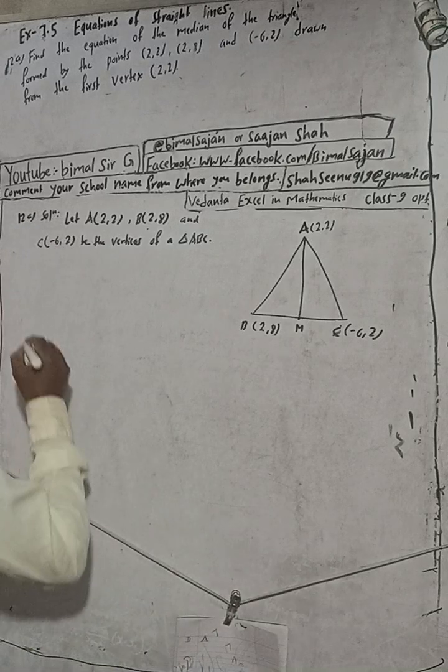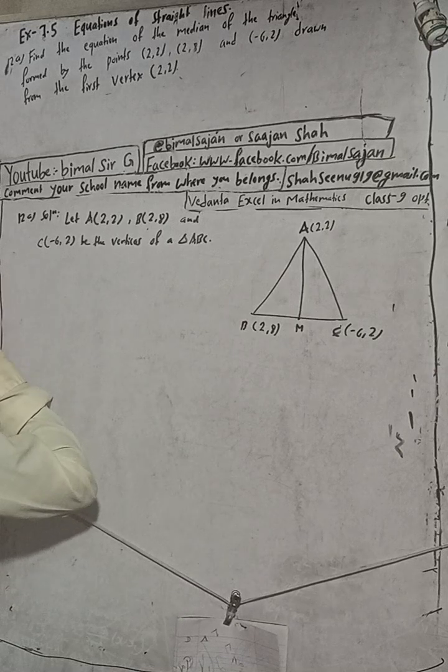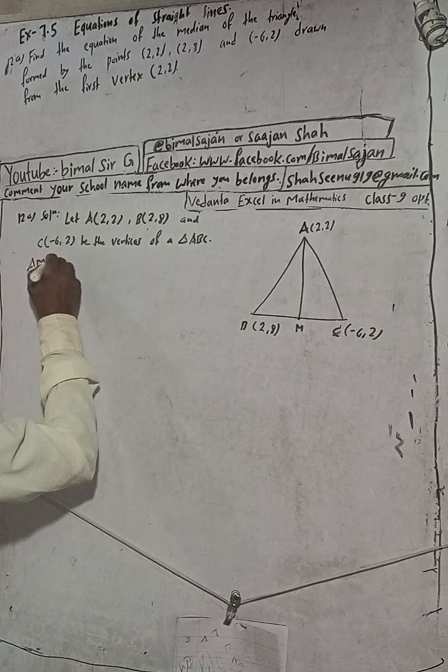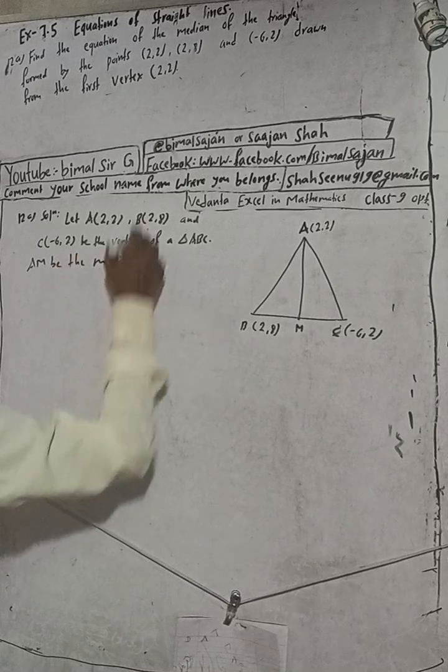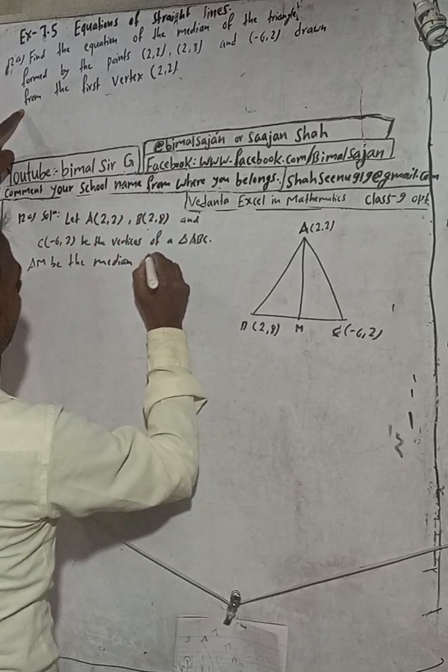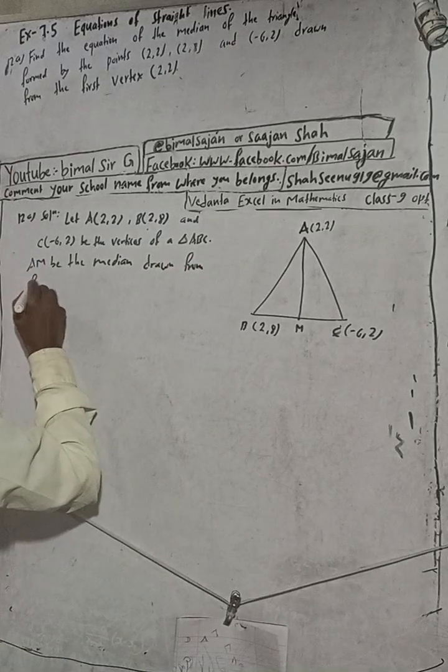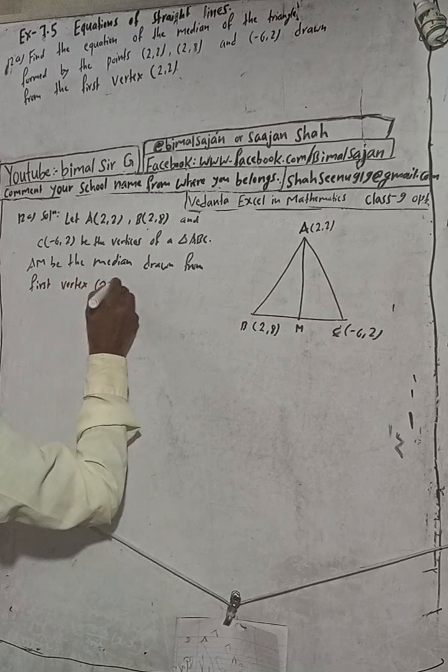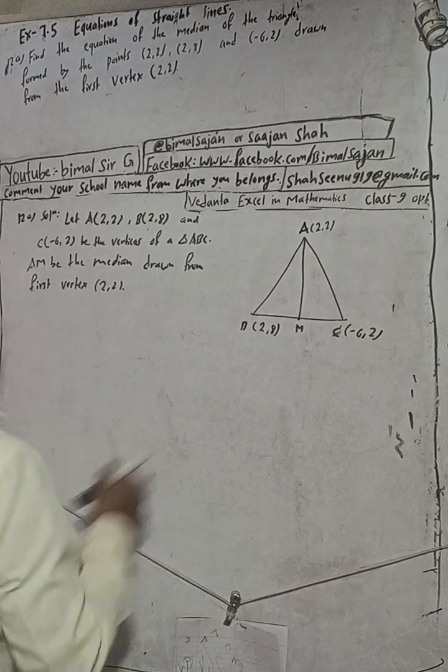Now, let AM be the median, be the median drawn from first vertex A(2,2). Now, to find this median, we have to find this point. What is this point? This is the midpoint.